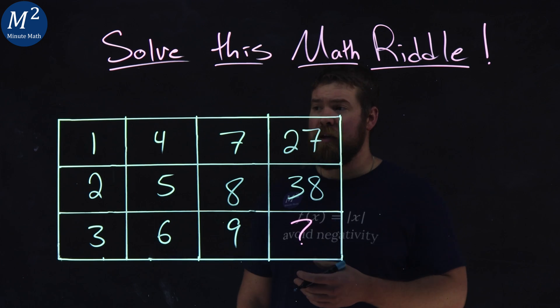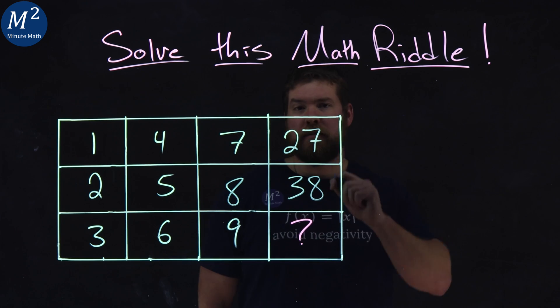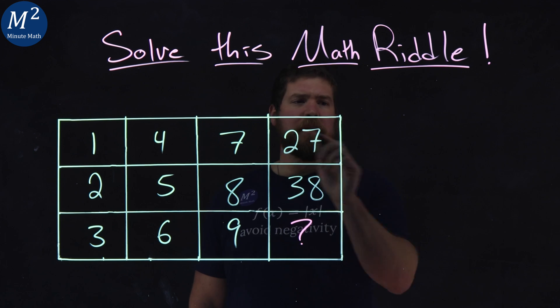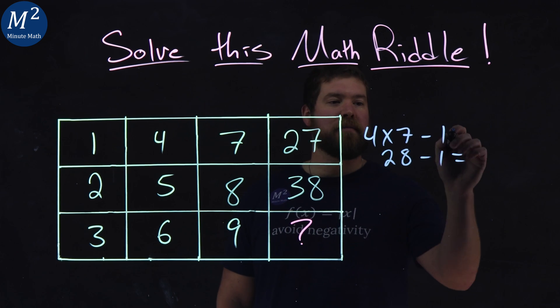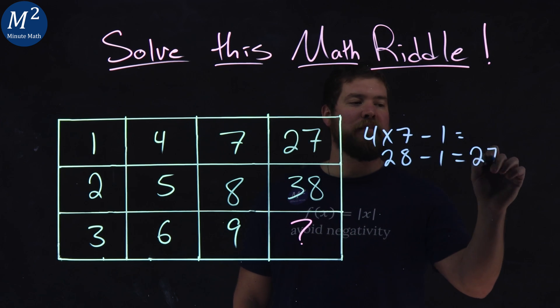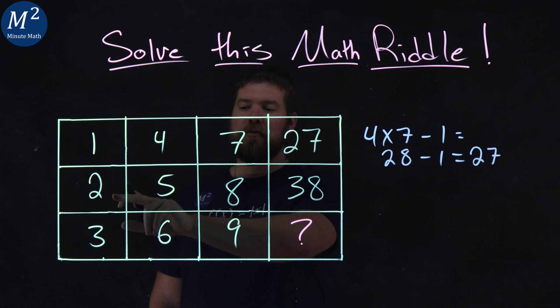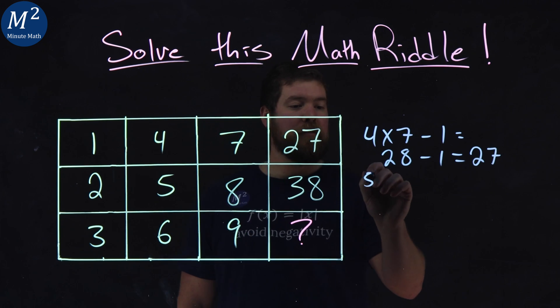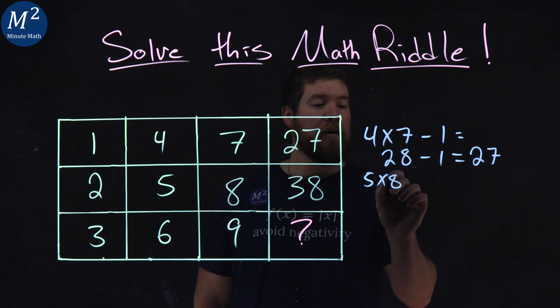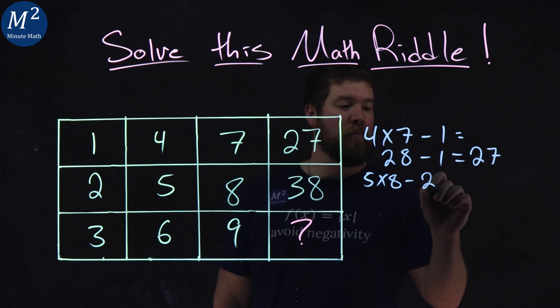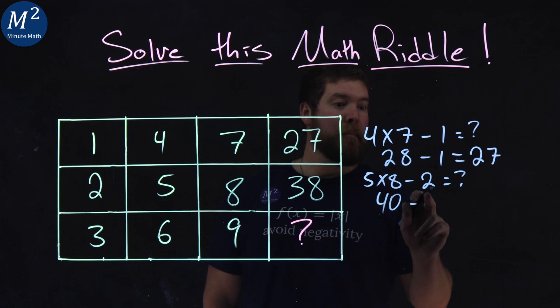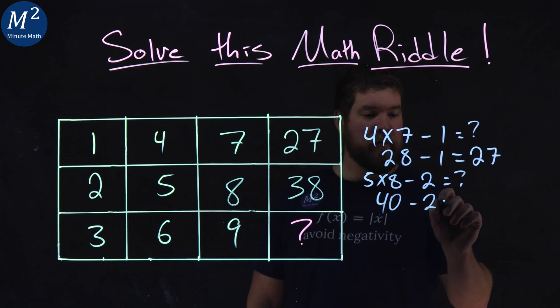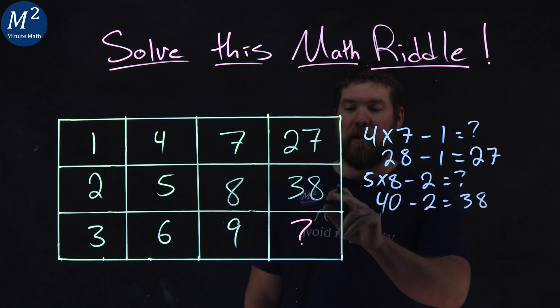The way I gravitated to this problem here was really looking across the rows. 4 times 7 gives me the 28 minus the 1, 28 minus 1 is a 27. If we do 2, 5 and 8, 5 times 8, same pattern, minus the 2, what does that equal? Well,